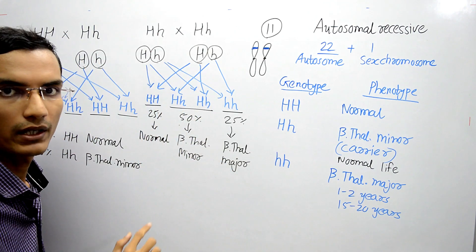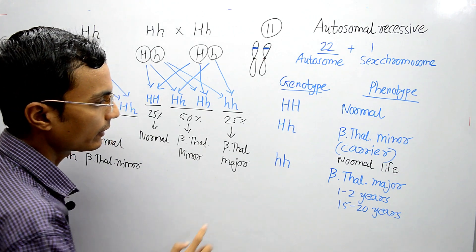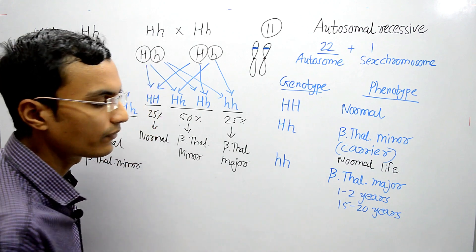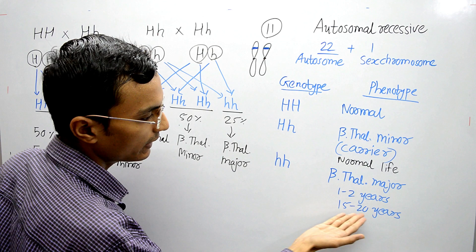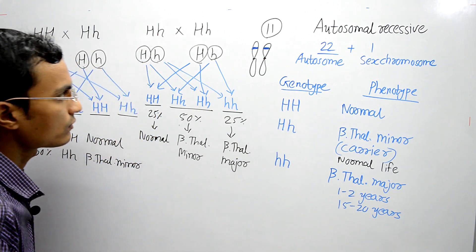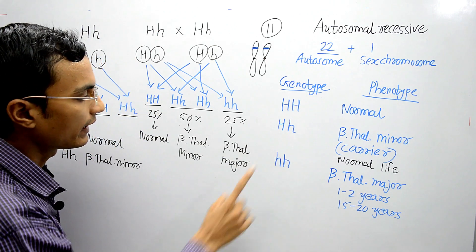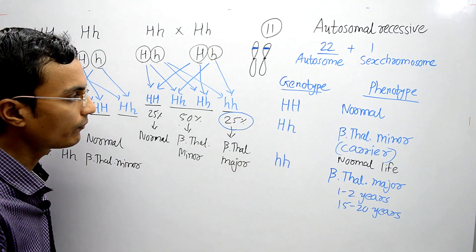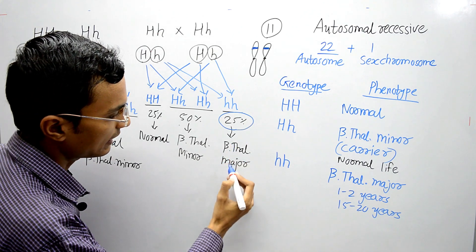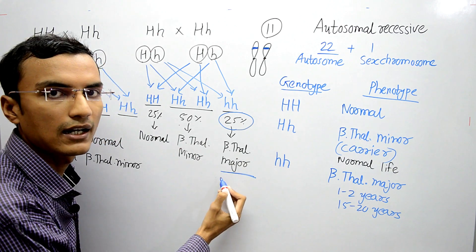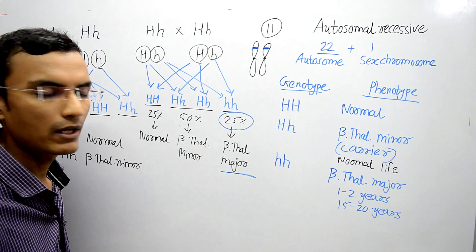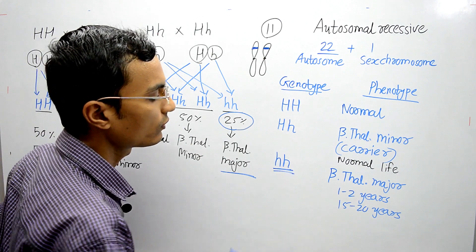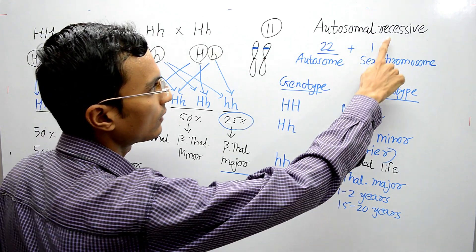These kinds of marriages should be avoided to prevent the birth of beta thalassemia major children, because these infants will die between one and two years due to anemia. With frequent blood transfusions the person can live up to 15 to 20 years, after which the person will die. Remember, the 25% chance applies each and every time the woman conceives. Beta thalassemia major phenotype is only expressed when both genes are recessive — that is why it is called a recessive trait.